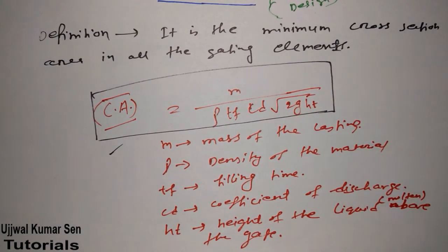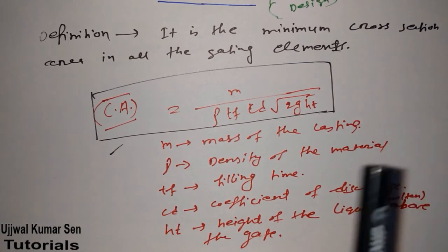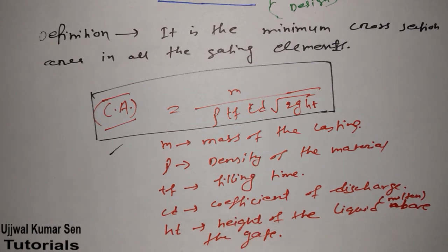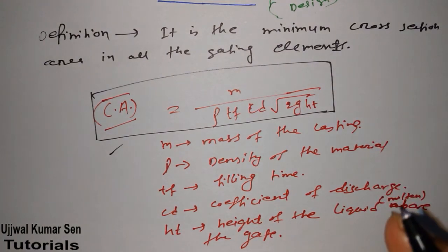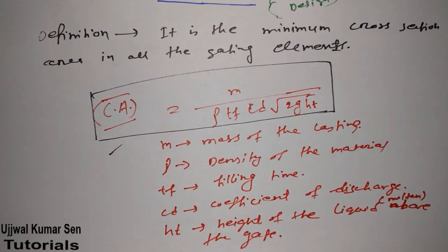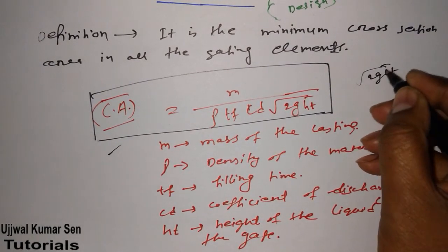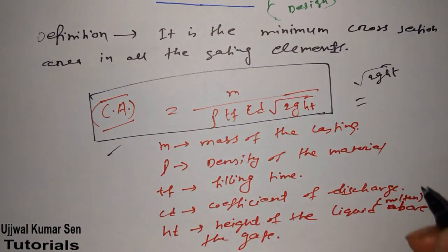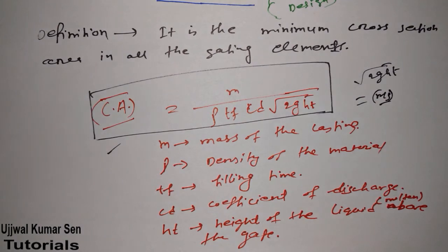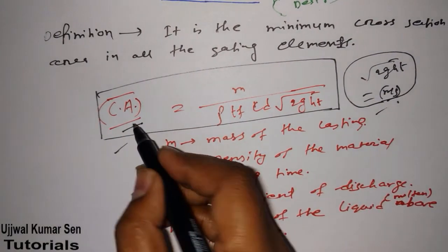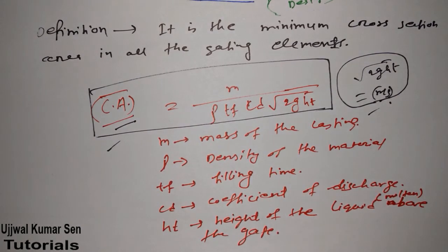One more thing — since density equals mass divided by volume, if mass cancels out, the formula can be rewritten as: Choke Area = Volume / (tf × Cd × √(2g × Ht)). Also, the term √(2g × Ht) represents the velocity of molten metal flow in the gate design, so examiners can relate this formula to gate design problems in future examinations.